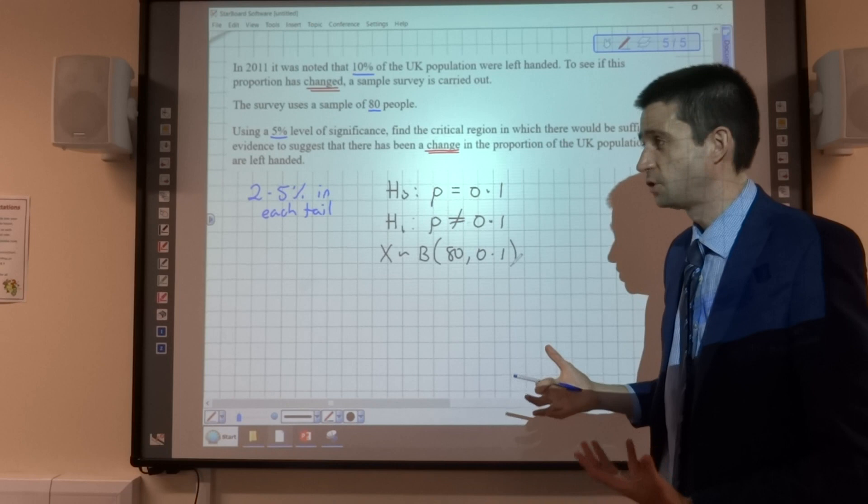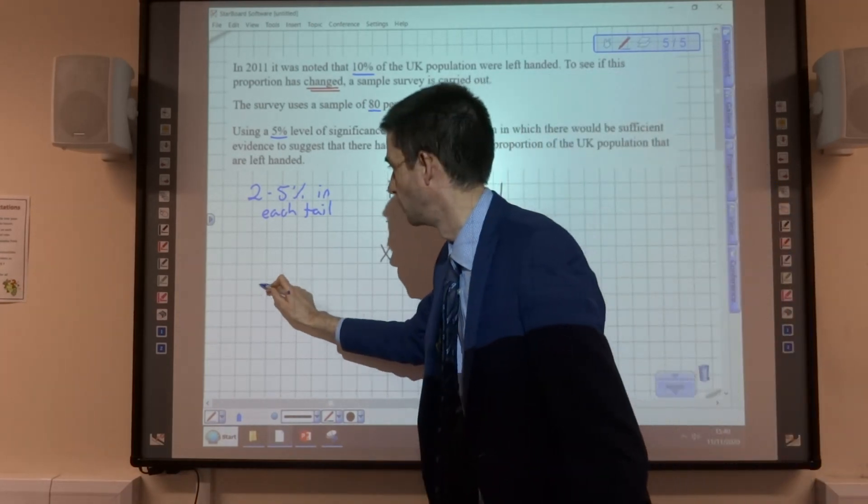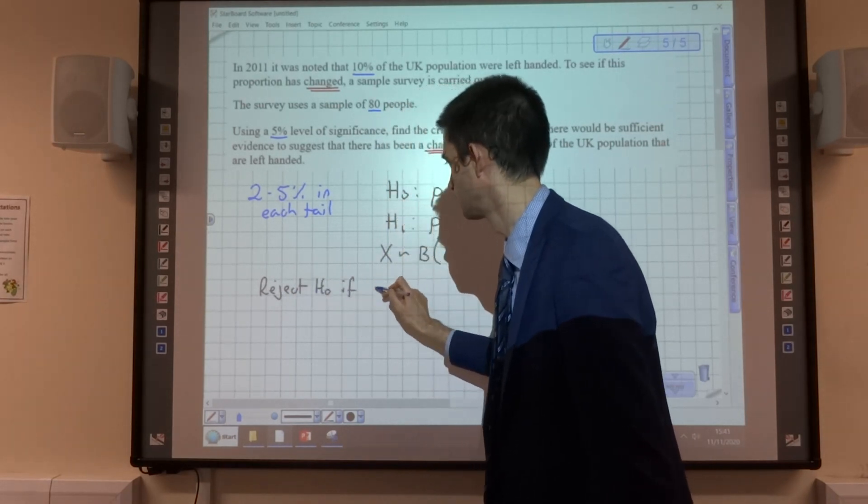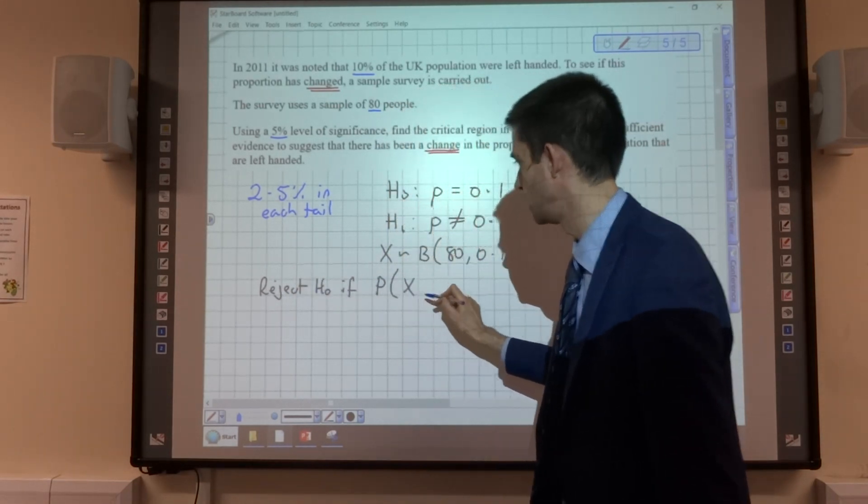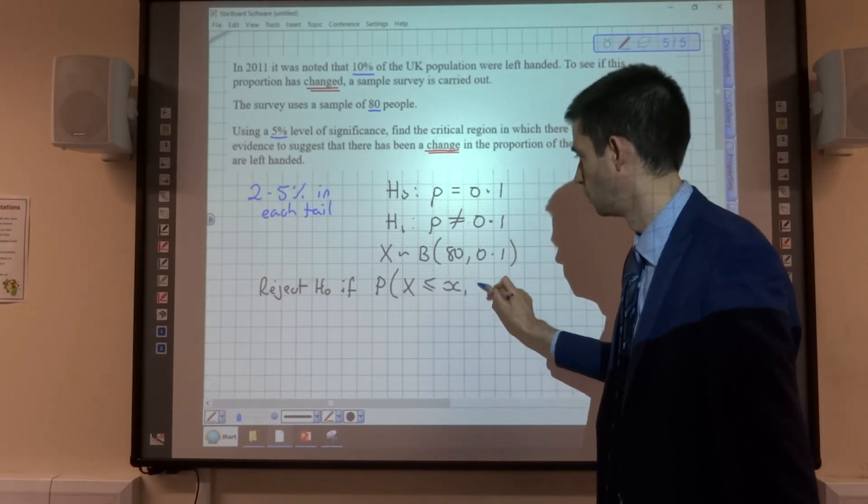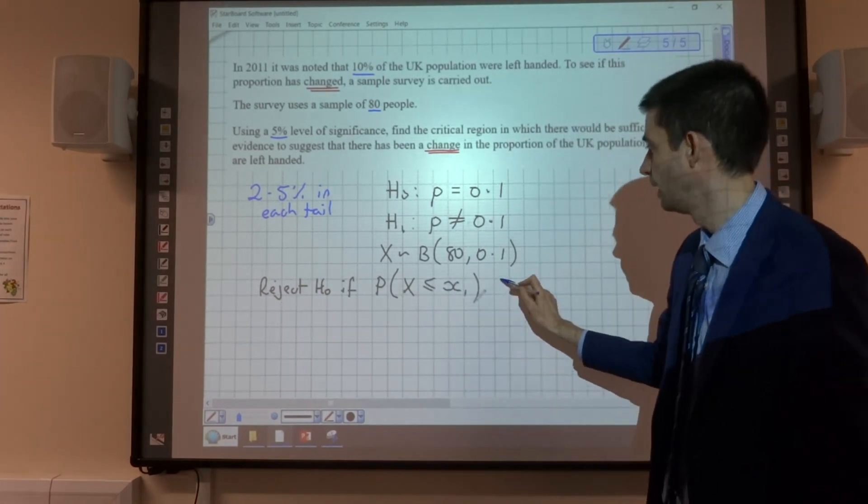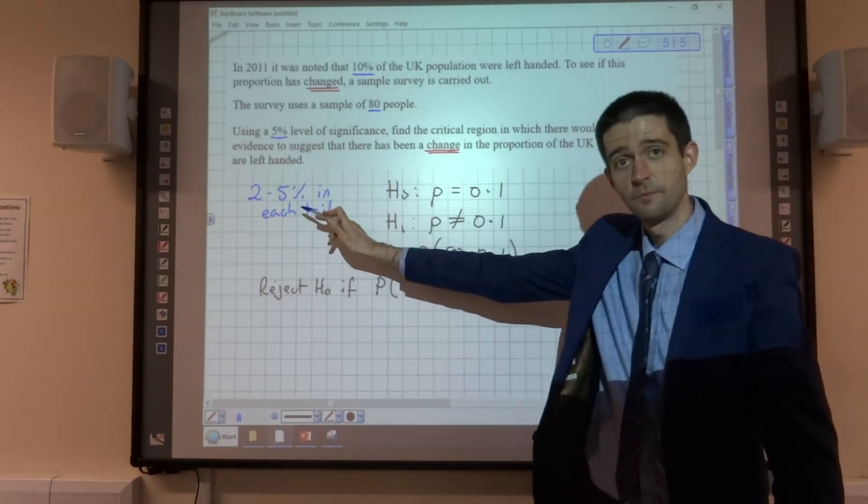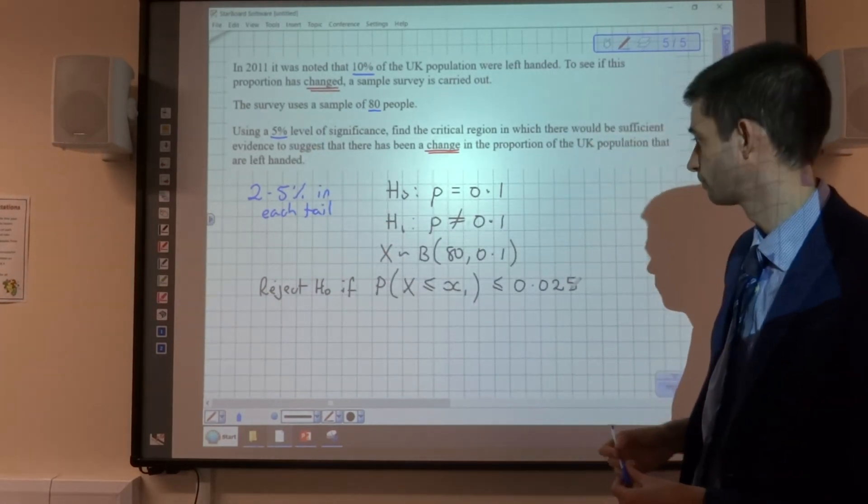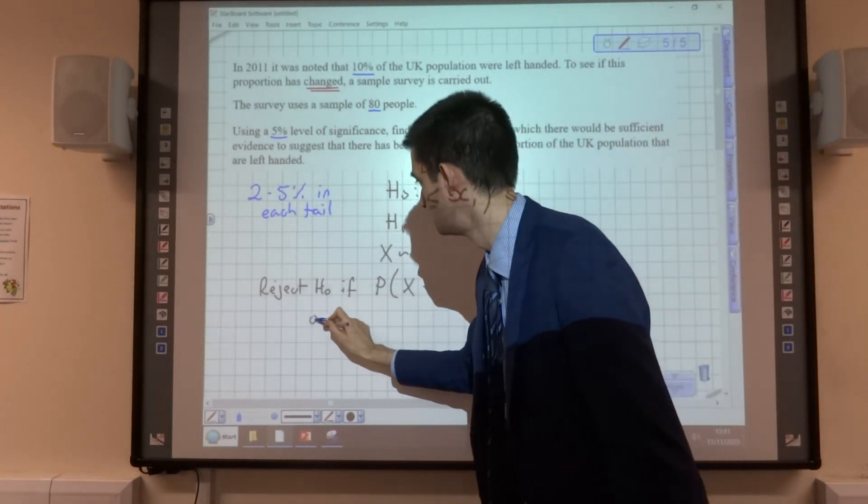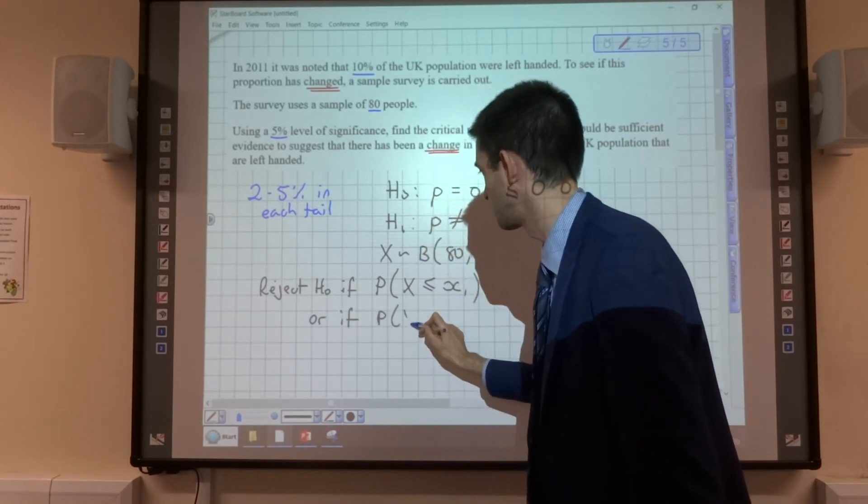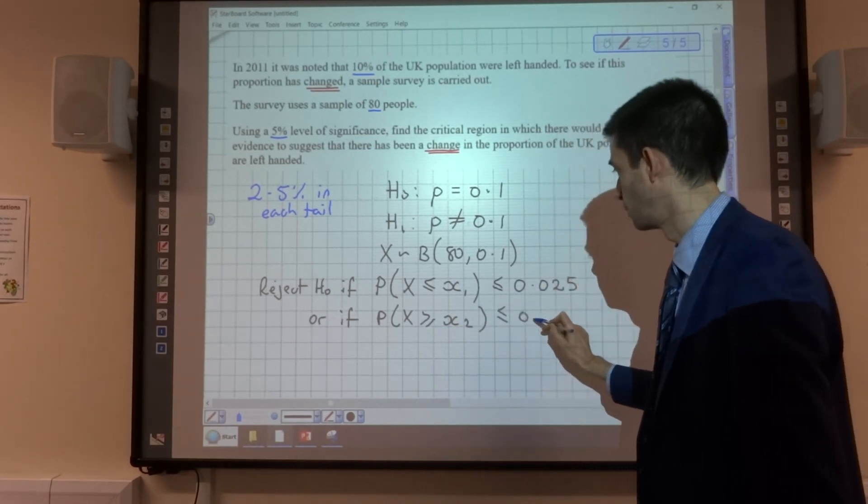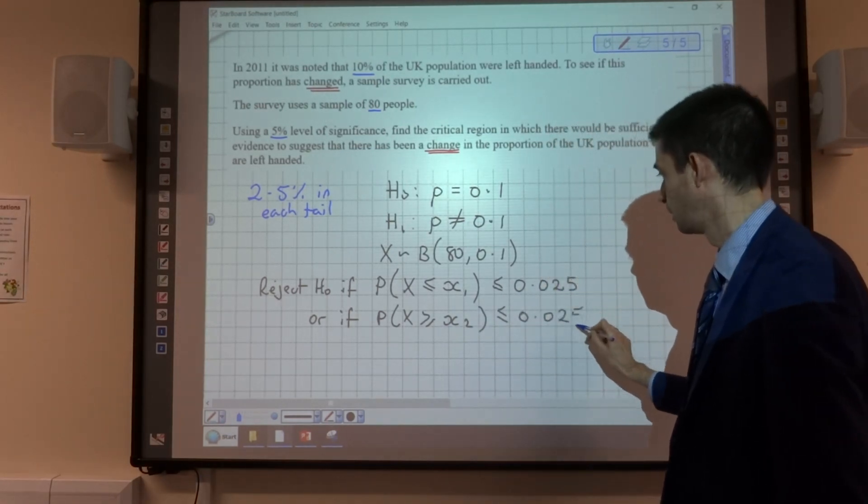And we're going to have two rejection statements here, so we're going to reject H0 if the probability of X being less than or equal to one X value is less than or equal to 0.025, that's the 2.5%, half the total significance level, or if the probability of X being greater than or equal to a different X value is less than or equal to 0.025.